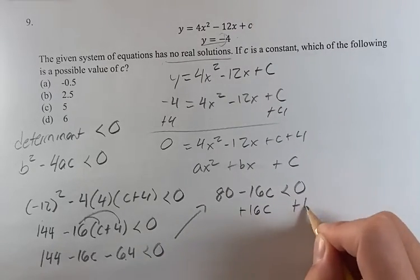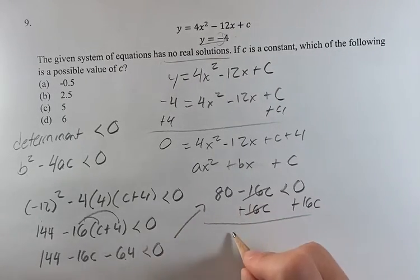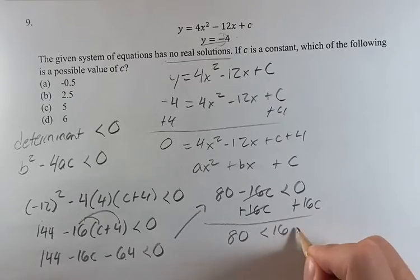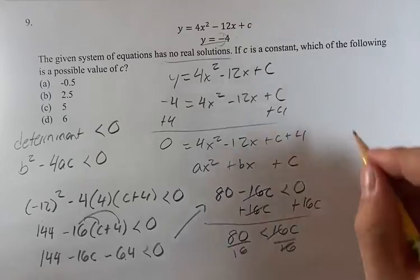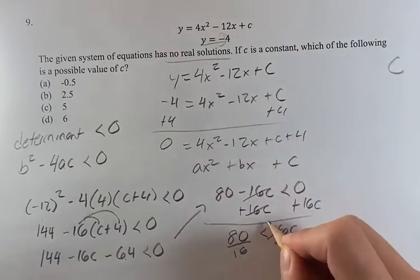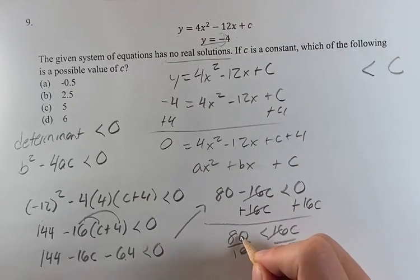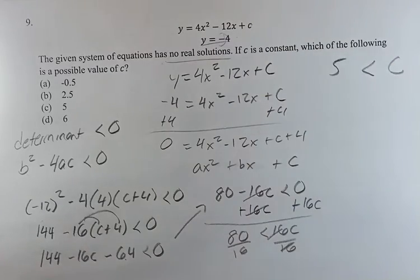If we add 16c to both sides to solve this inequality, then divide both sides by 16 to isolate c, we get c is greater than 80 over 16, which is 5.